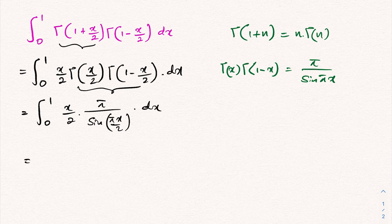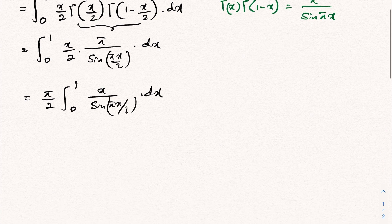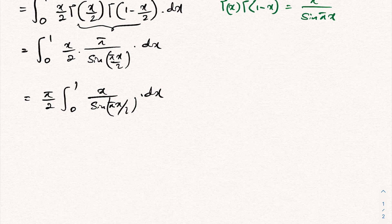Now pi/2 is a constant, so we can write it outside of the integral sign. We have pi/2 times the integral from 0 to 1 of x over sine of (pi*x/2) dx.